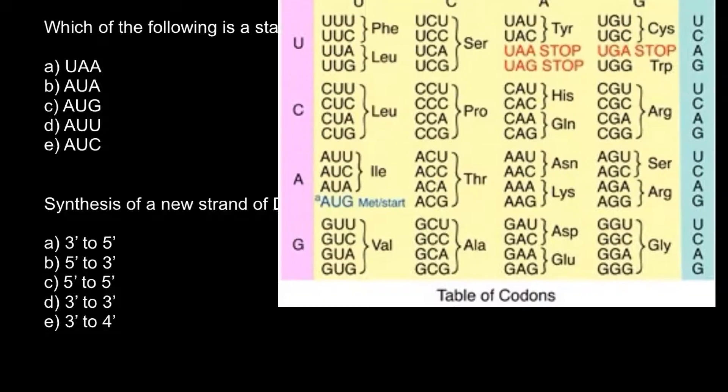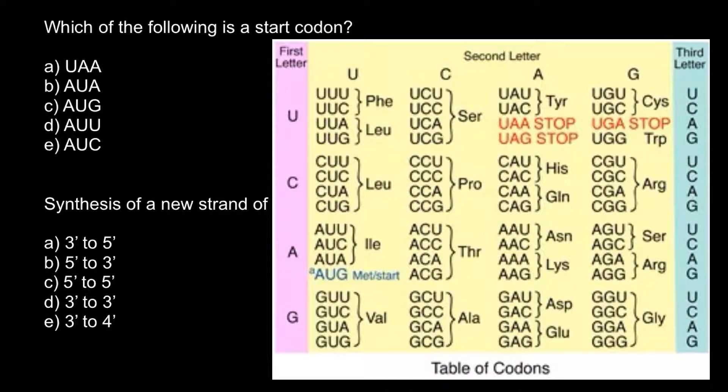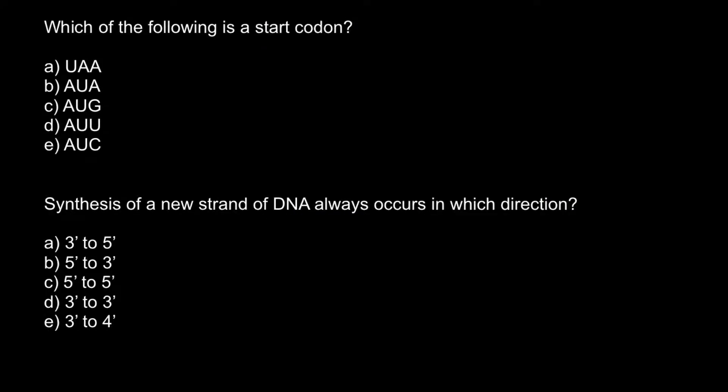So here is a codon table and as you see here we have three stop codons that don't specify any amino acids and we have one start codon that also specifies amino acid methionine. So AUG specifies start codon and this is answer C.